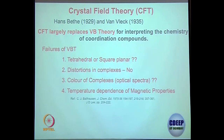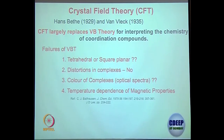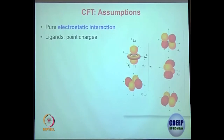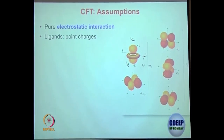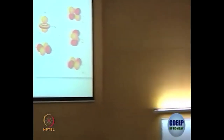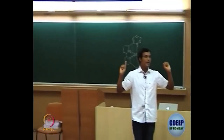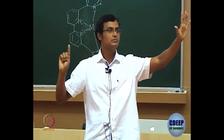Temperature dependence — why magnetic properties depend on temperature, whether magnetic susceptibility goes up or down and how — is also something we will be discussing. Now, for crystal field theory we first have to look at the orbitals, specifically the five d-orbitals, and be very clear about how they are oriented and where they are along the axes.